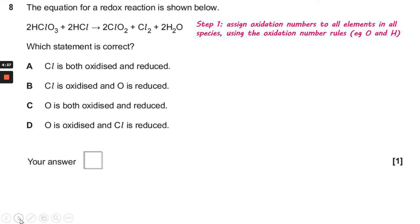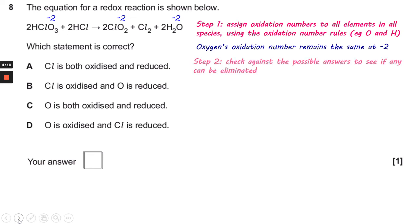Let's start by assigning oxidation numbers using the rules that we know. For oxygen, unless it's combined with fluorine or in a peroxide, it is always minus 2. So we can put minus 2 above the oxygen in each of the species that contains it. We can see that oxygen's oxidation state doesn't change, which suggests it doesn't undergo any redox activity here.